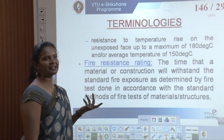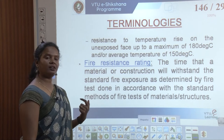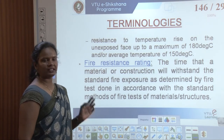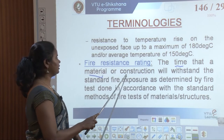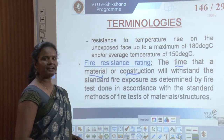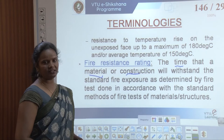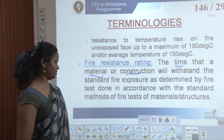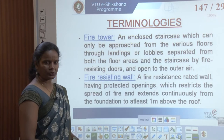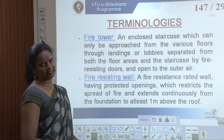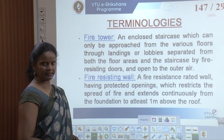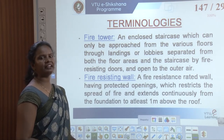Fire resistance also includes resistance to penetration of flame and hot gases. The material used for these particular spaces has to resist the penetration of flame and hot gases, and also has to resist temperature rise on the unexposed face up to a maximum of 180 degrees centigrade and an average of 150 degrees centigrade. Those are the fire resisting properties of a material.